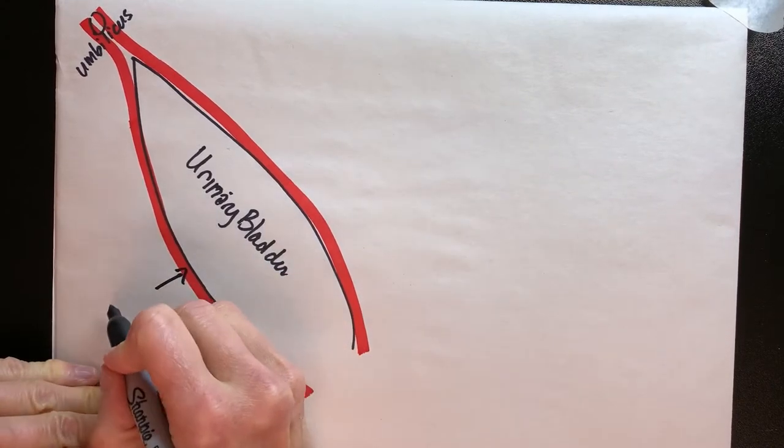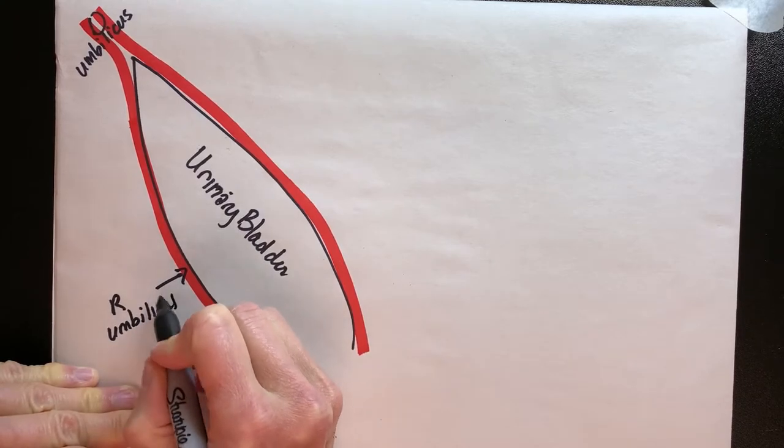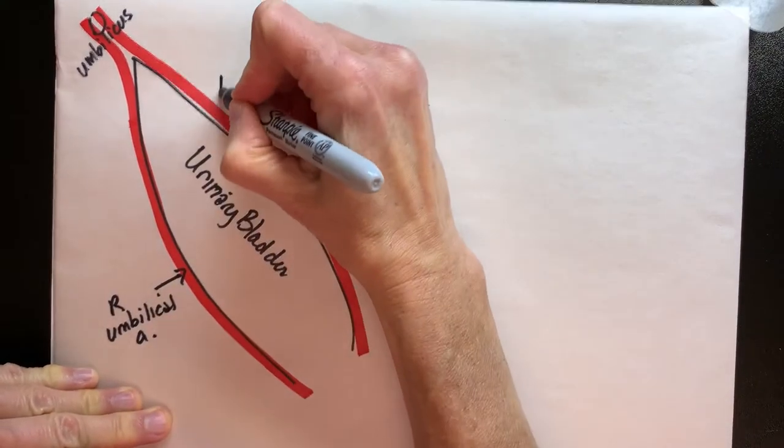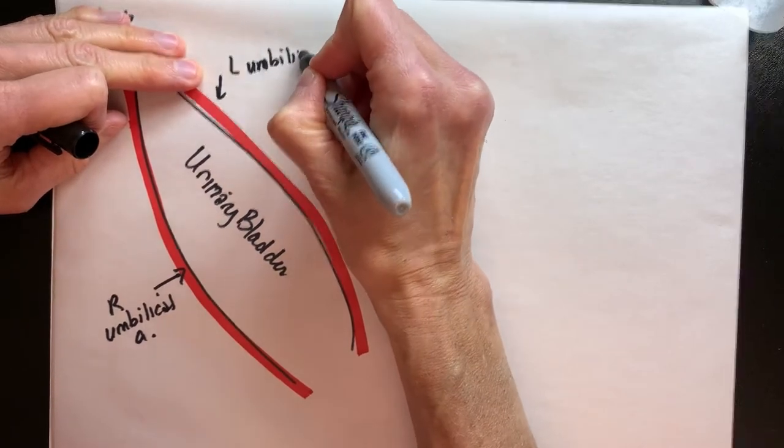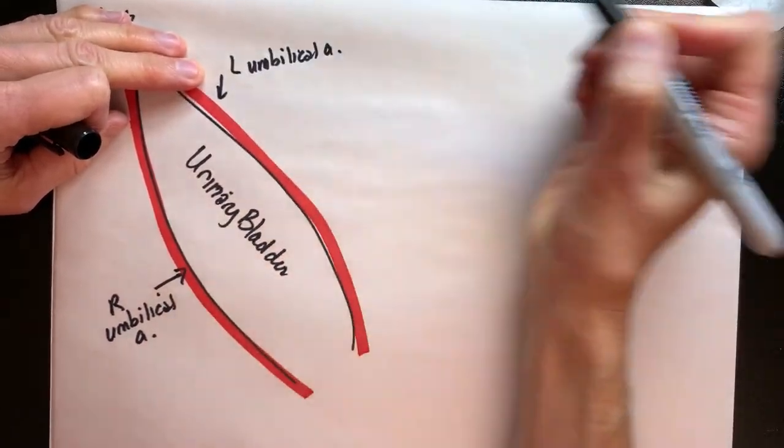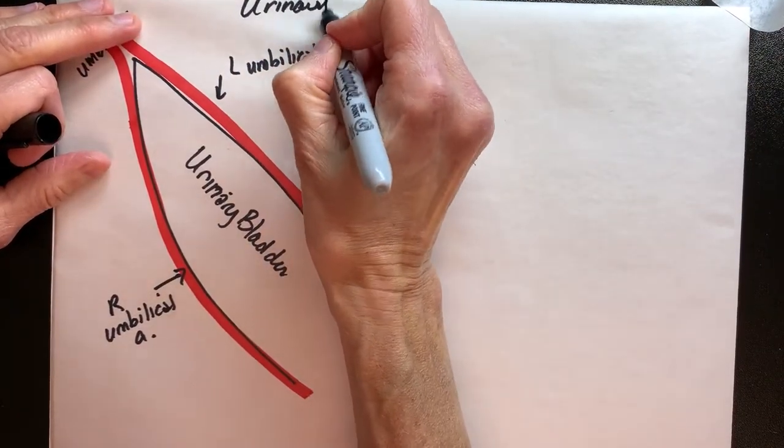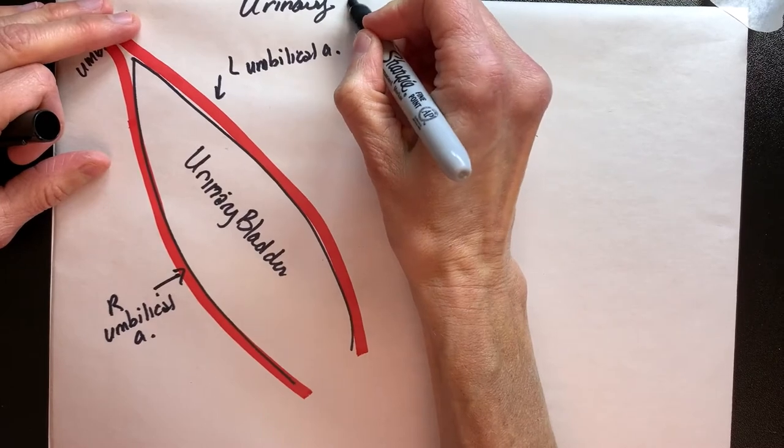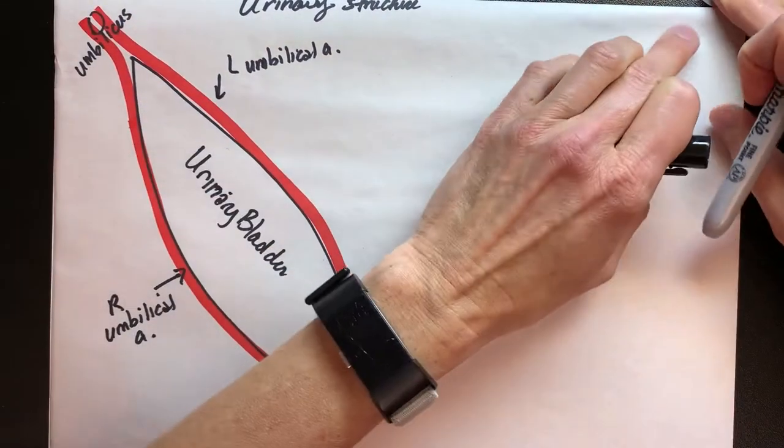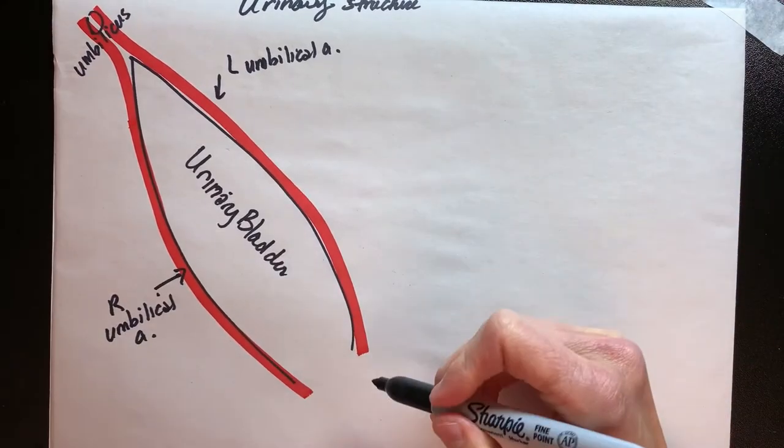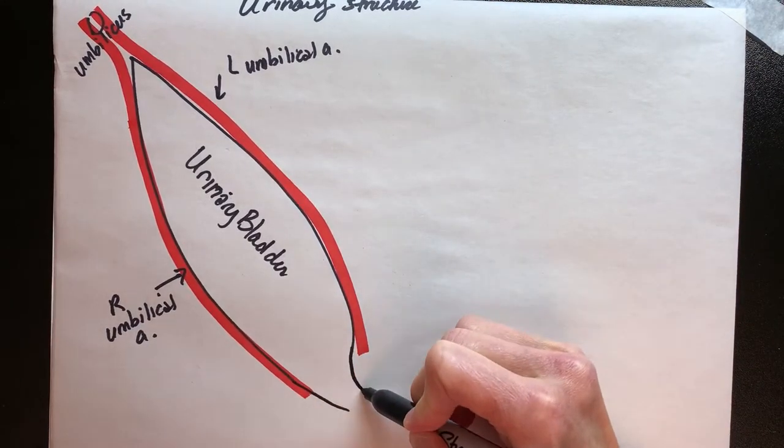This is the right umbilical artery and here's the left umbilical artery. This is going to be the urinary structure for the fetal pig. As we come out of the bladder, the bladder is easy to recognize, so I drew that first.